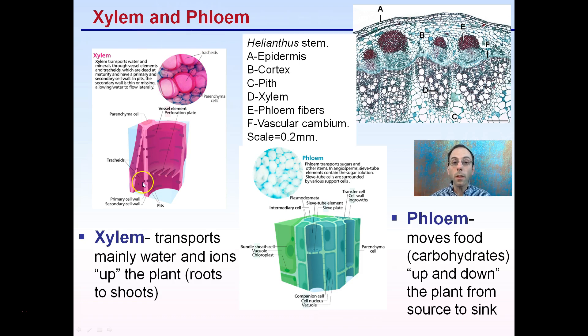The xylem is transporting mainly water and some ions up the plant — from the roots upward to the shoots, like the stems or the leaves, in one direction.